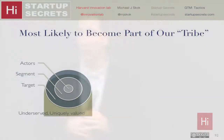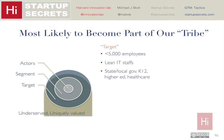Those are the folks that are going to become part of our tribe. Our target is organizations with fewer than 5,000 people — they probably have a pretty lean IT staff. Typical verticals that reflect that: state and local government, K-12, higher education, mid-sized healthcare. Those are the kinds of firms with those characteristics. That's who we target; those become our tribe.